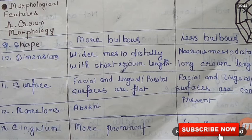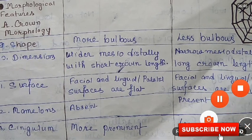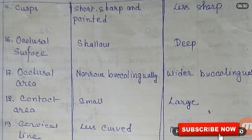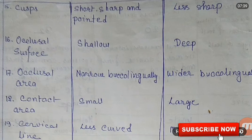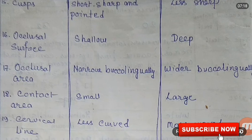The cingulum is the portion of the tooth that forms a convex protuberance at the cervical third of the anatomical crown. Cusps are short, sharp, and pointed in deciduous teeth and less sharp in permanent teeth. The occlusal surface is shallow in deciduous teeth and deep in permanent teeth. The occlusal area is narrow buccolingually in deciduous teeth and wider buccolingually in permanent teeth.